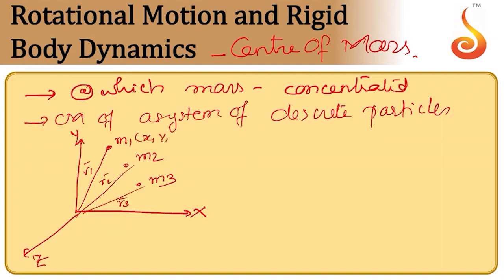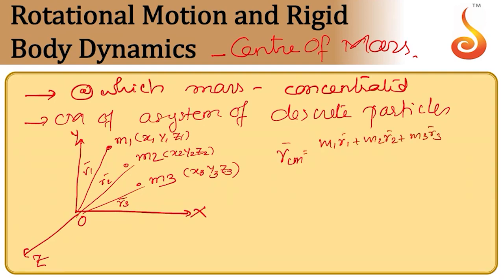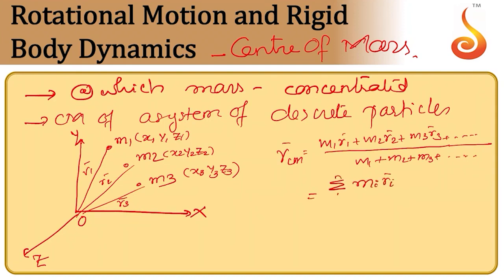Their coordinates are x1, x2, y2, z2 and x3, y3, z3. We can consider many such particles. This is the origin. Then, the center of mass of this system is given by m1r1 plus m2r2 plus m3r3 divided by m1 plus m2 plus m3, etc. This can be written as sigma(mi·ri) from 1 to n, divided by sigma(mi) from 1 to n. The denominator is the total mass of the system.